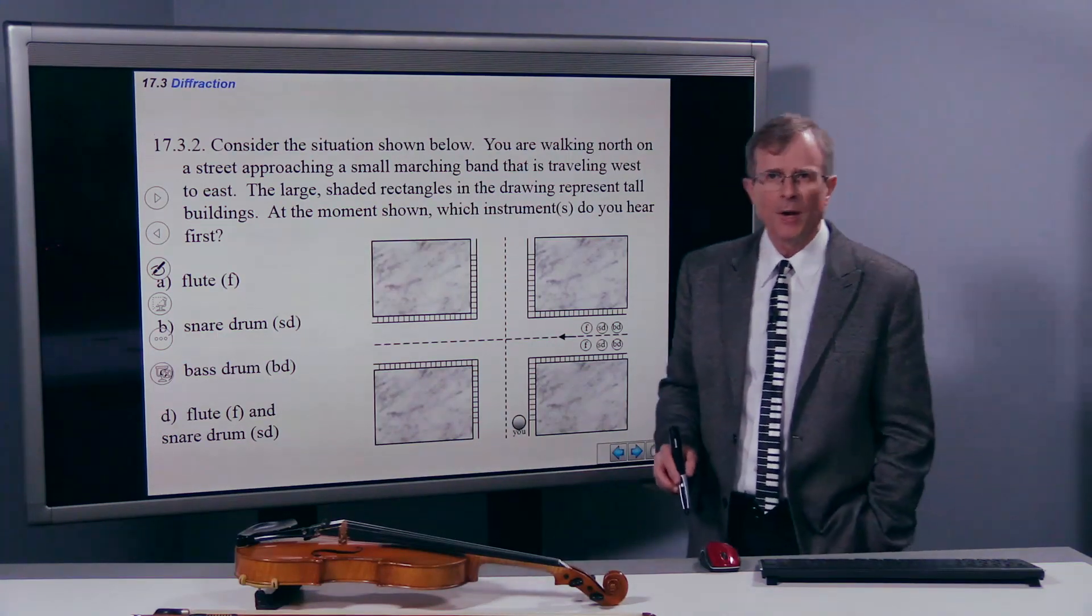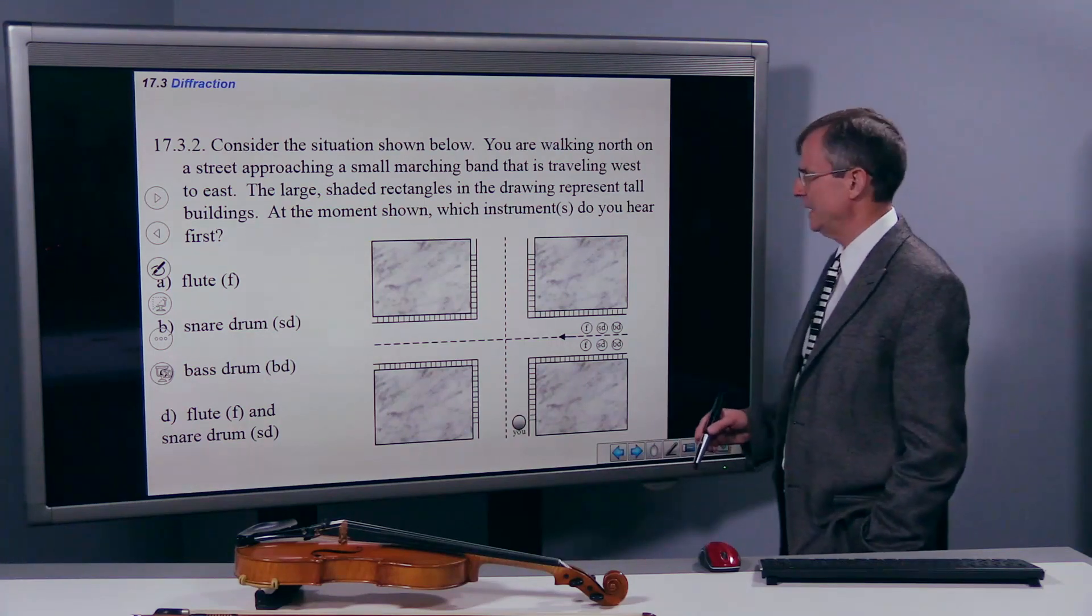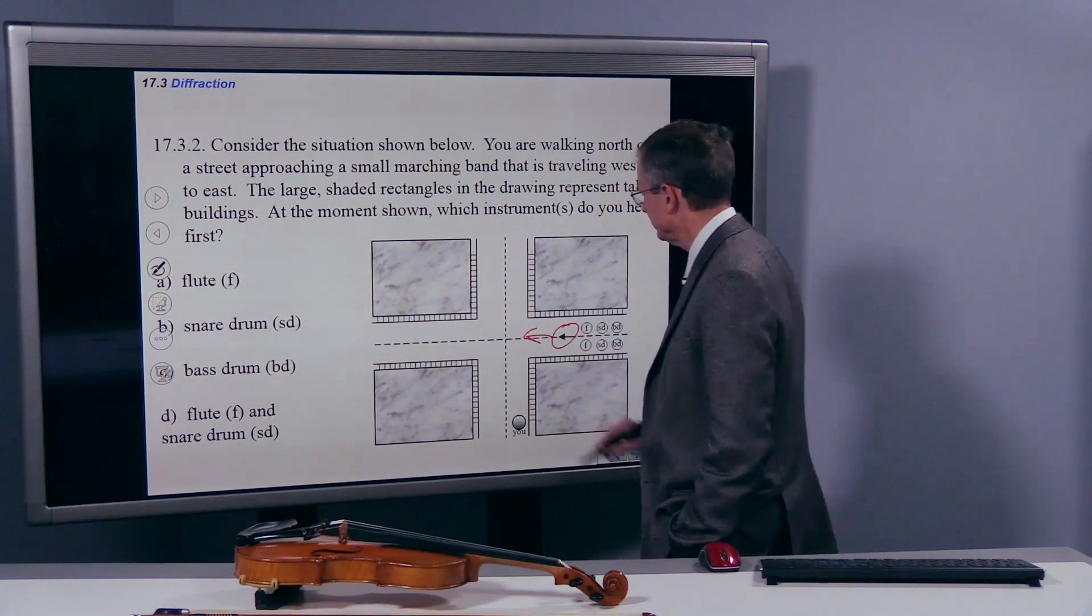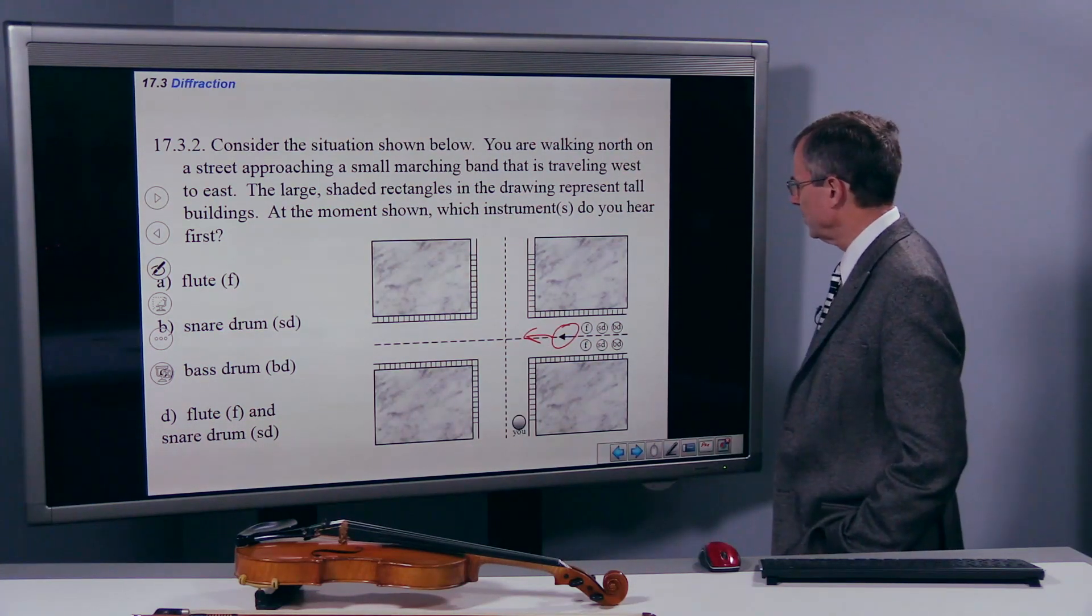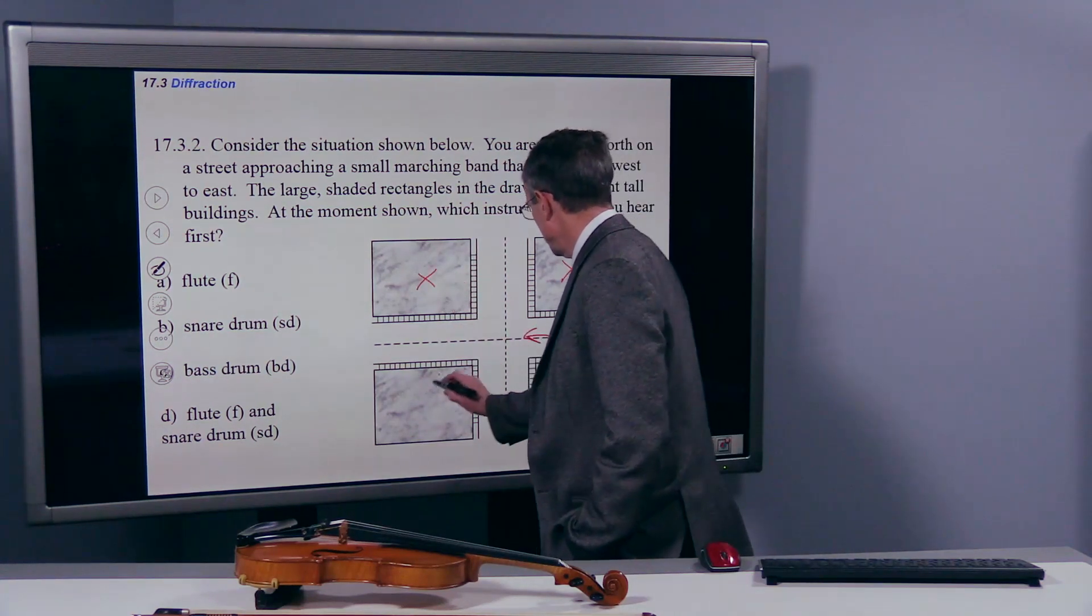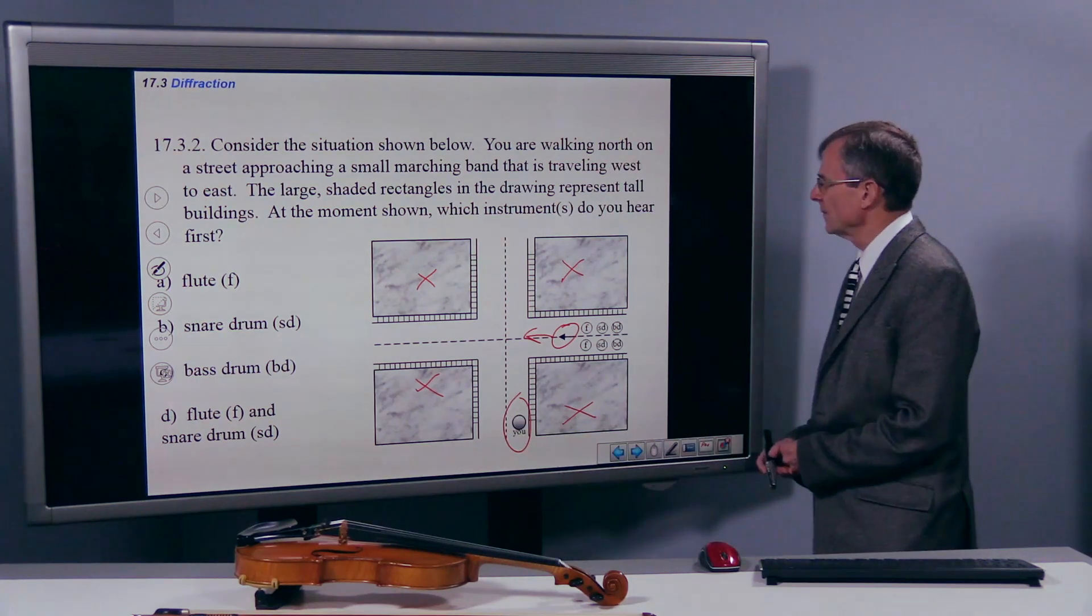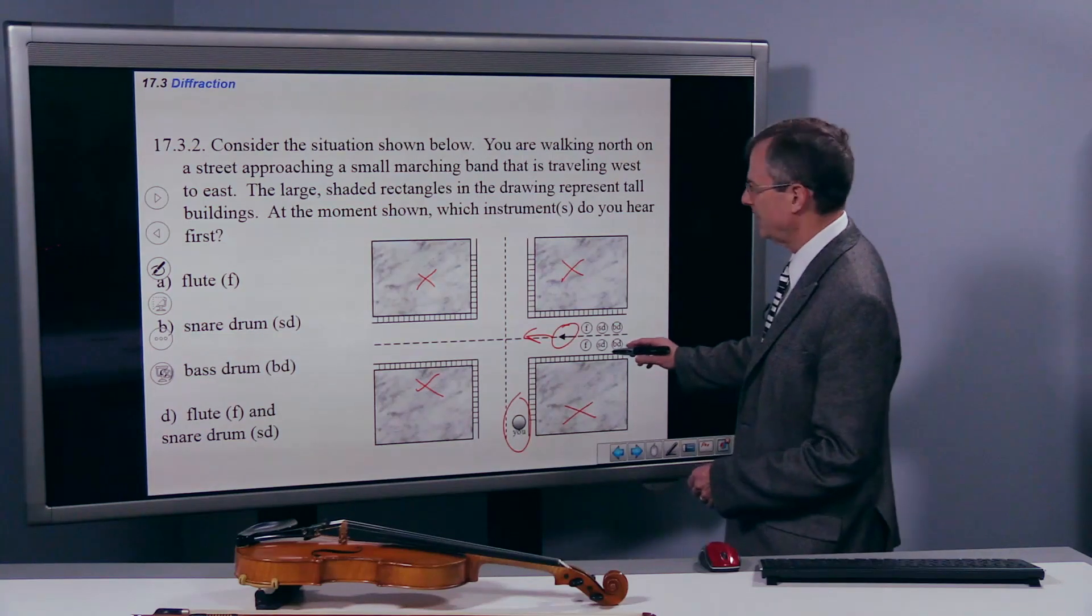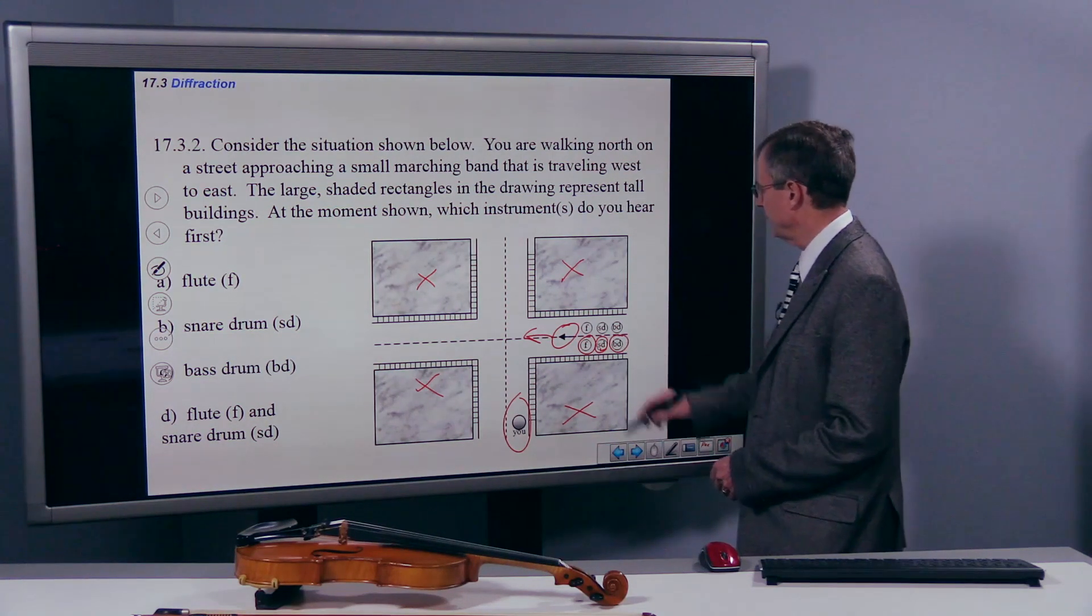Consider the situation below. You're walking north in a street approaching a small marching band that's traveling west to east. Marching band going this way. It's a wonderful parade. The large shaded rectangles represent buildings. So here's some buildings, and here's you. Which instrument are you going to hear first? So here's the flutes, here's the snare drums right here. Flutes, snare drums, and bass drums.